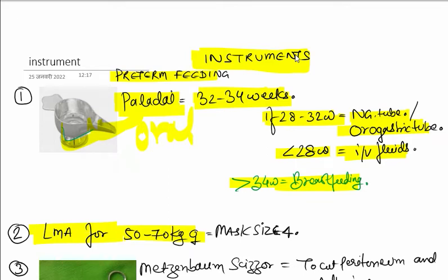If baby is 28 to 32 weeks, orogastric tube or nasogastric tube may be used. If baby is less than 28 weeks, IV fluid is the best. If baby is more than 34 weeks, breastfeeding is the best.